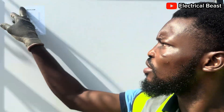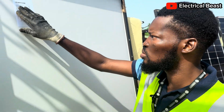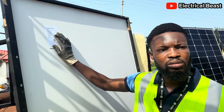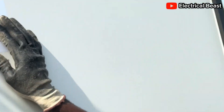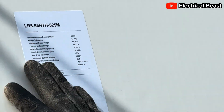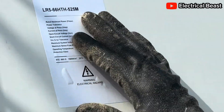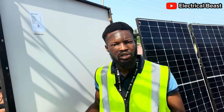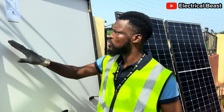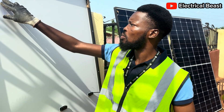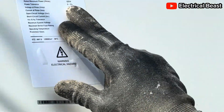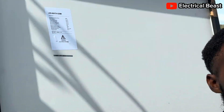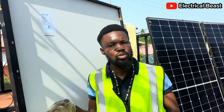We have here rated maximum power, or Pmax. Pmax simply means the highest amount of energy that this solar panel can produce under ideal conditions when the sun is at its peak — that's Pmax. The power tolerance is zero to three percent, which means this solar panel at that ideal condition cannot produce less